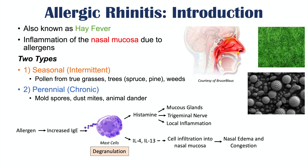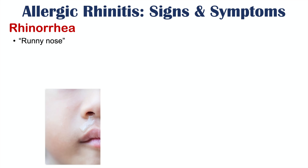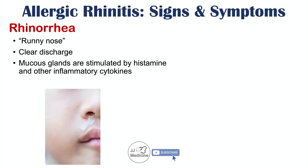This is a brief overview of the pathophysiology, but it helps us understand why signs and symptoms occur. The first symptom is rhinorrhea, which means a runny nose. The discharge is clear — that is very key. This is because the mucus glands are stimulated by histamine and other inflammatory cytokines to produce and release mucus.